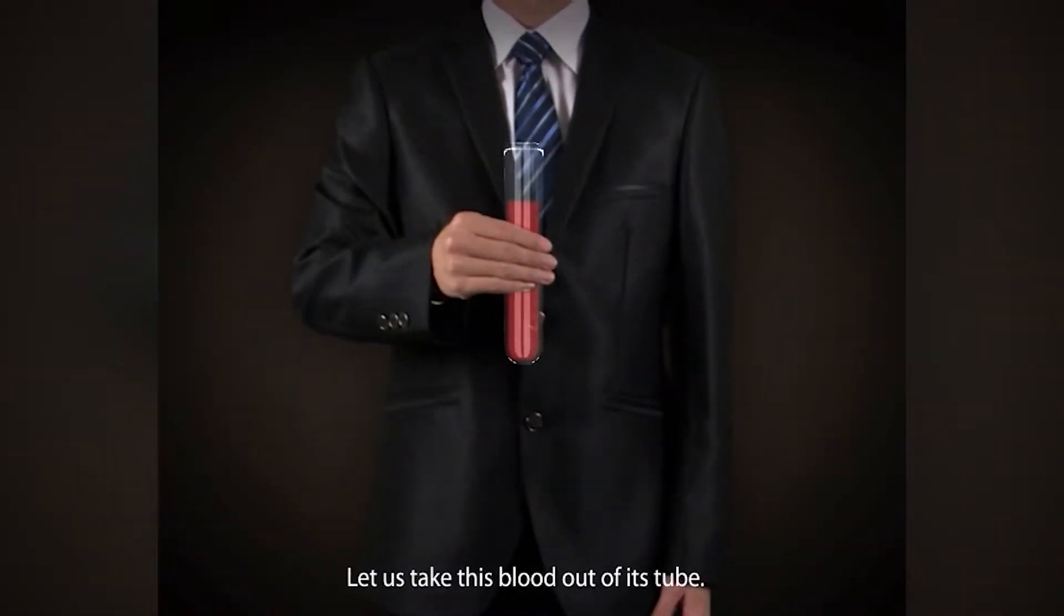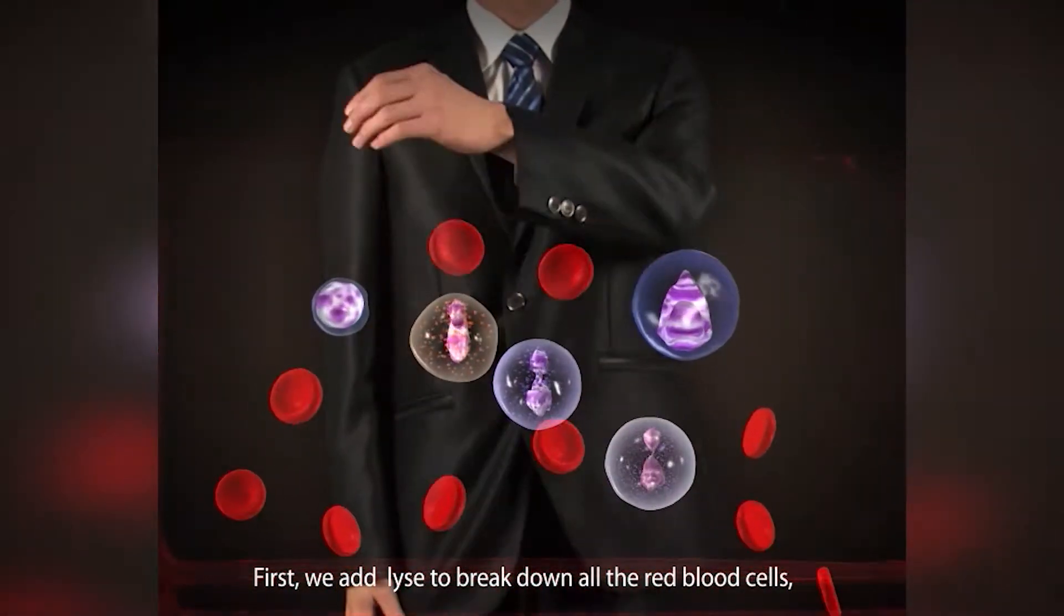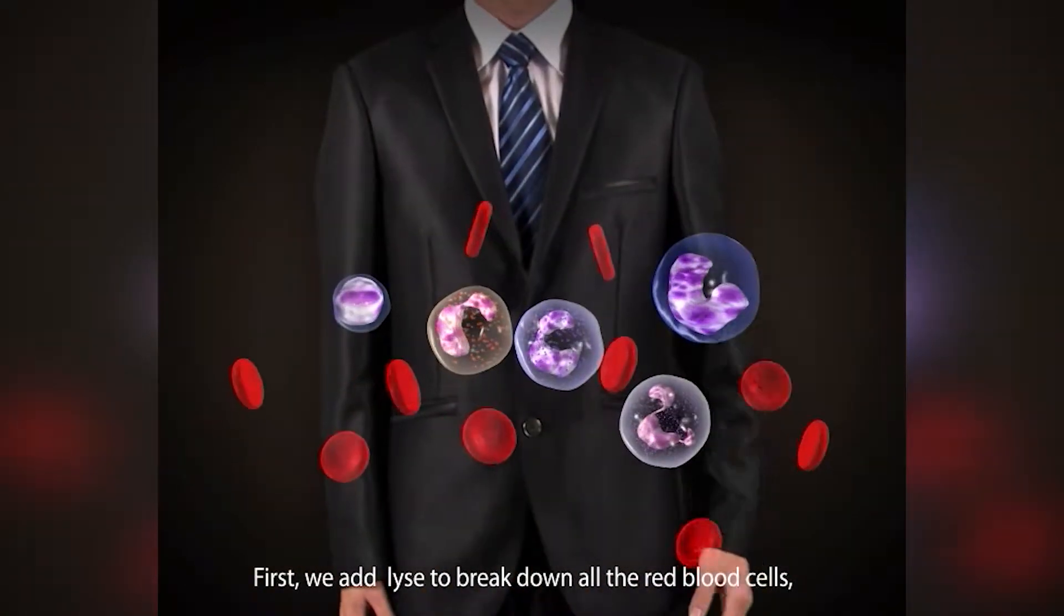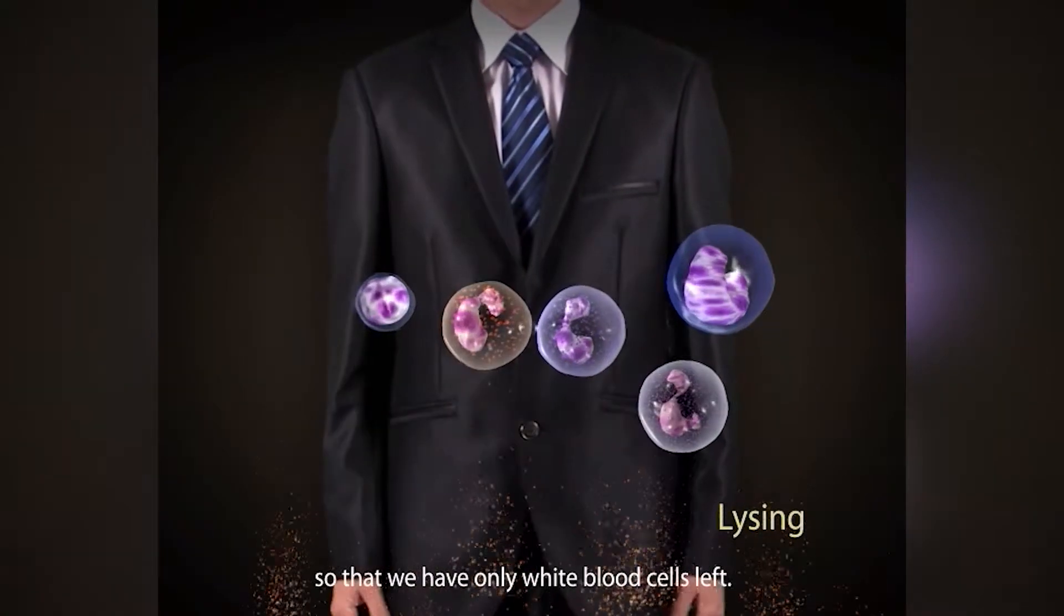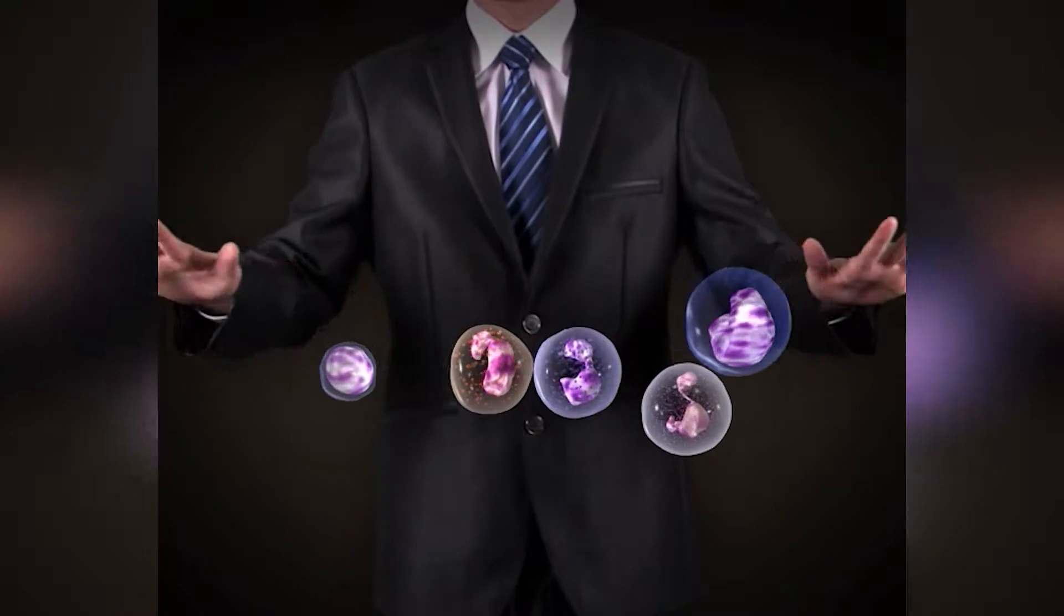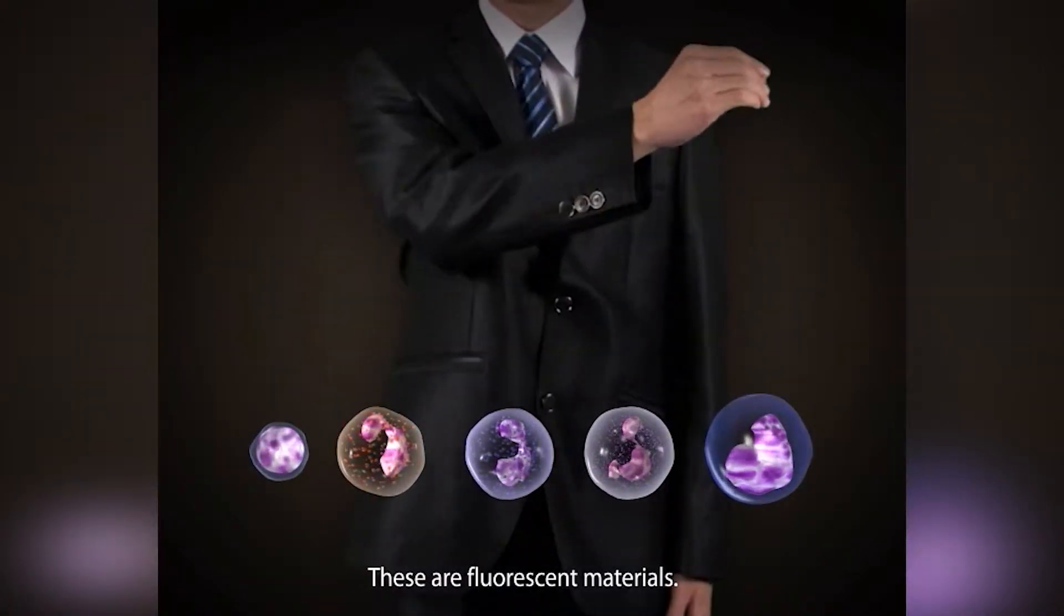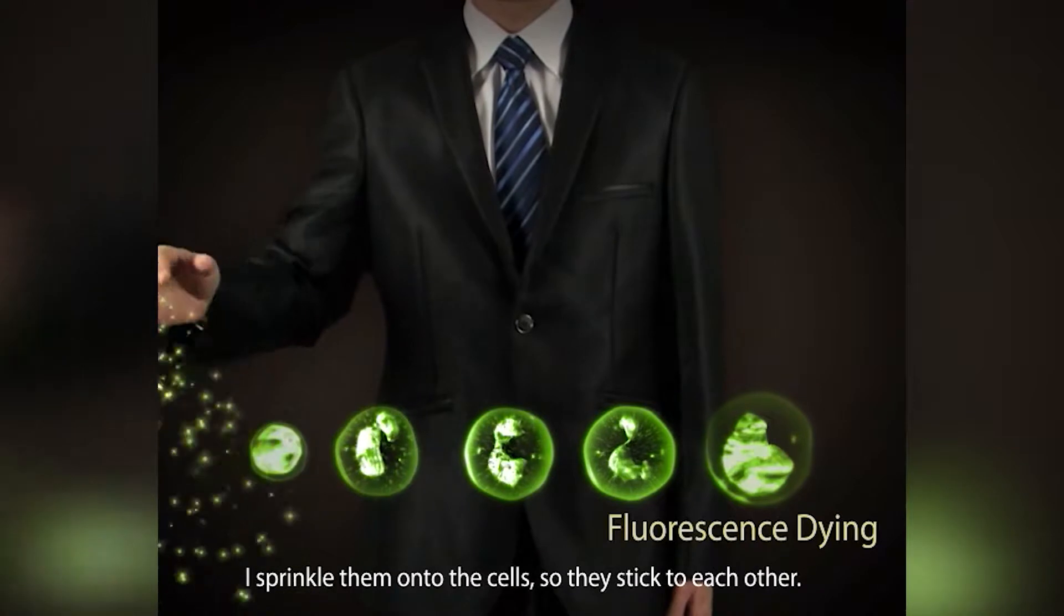Let's take this blood out of its tube. First, we add lysis to break down all the red blood cells, so that we only have white blood cells left. These are fluorescent materials. I sprinkle them onto the cells so they stick to each other.